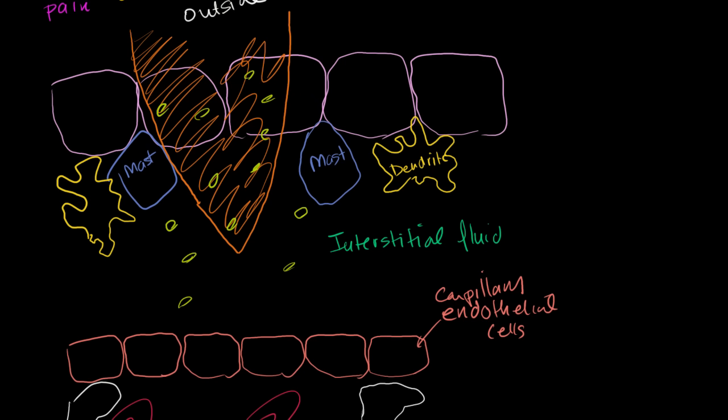Those skin cells are immediately going to start releasing chemicals. The ones that are still in a position to do so, they're going to start releasing chemicals that are essentially chemical messengers that move through the, well, at first, locally in the interstitial fluid, and says, something is going on. Something has happened to me. And these are called chemokines.